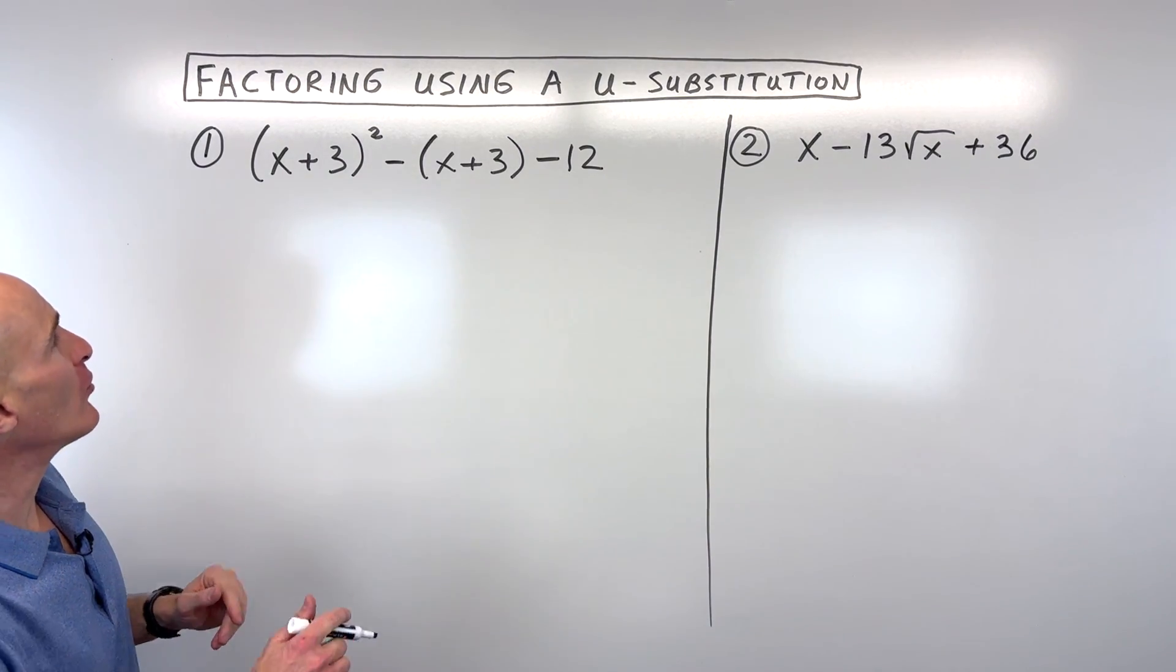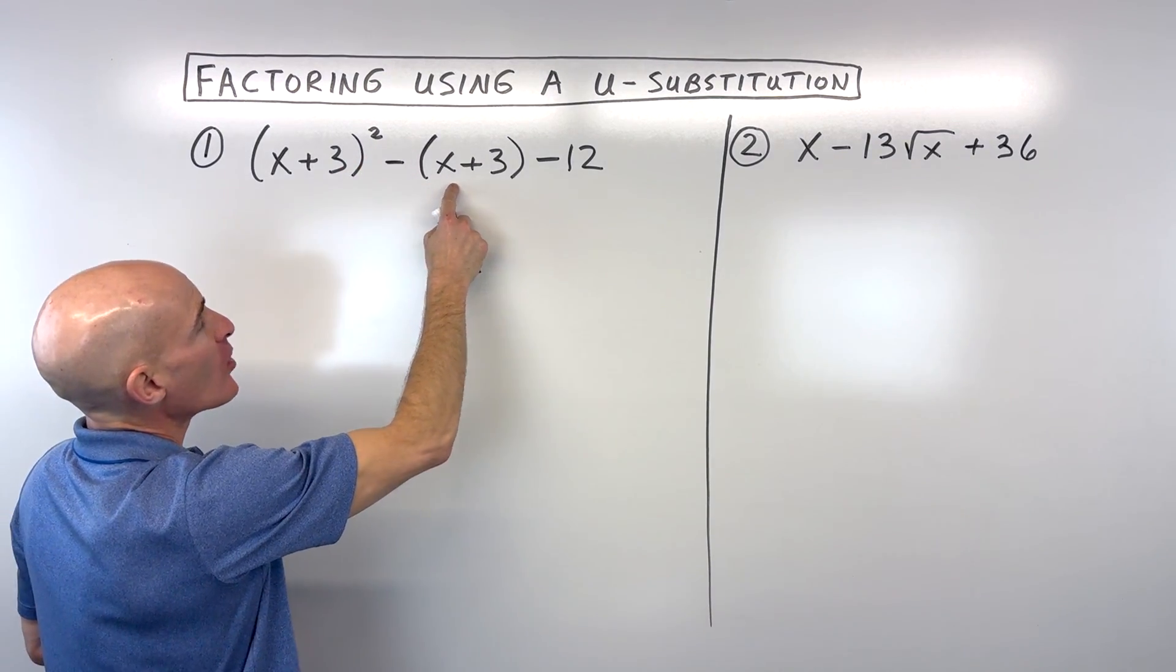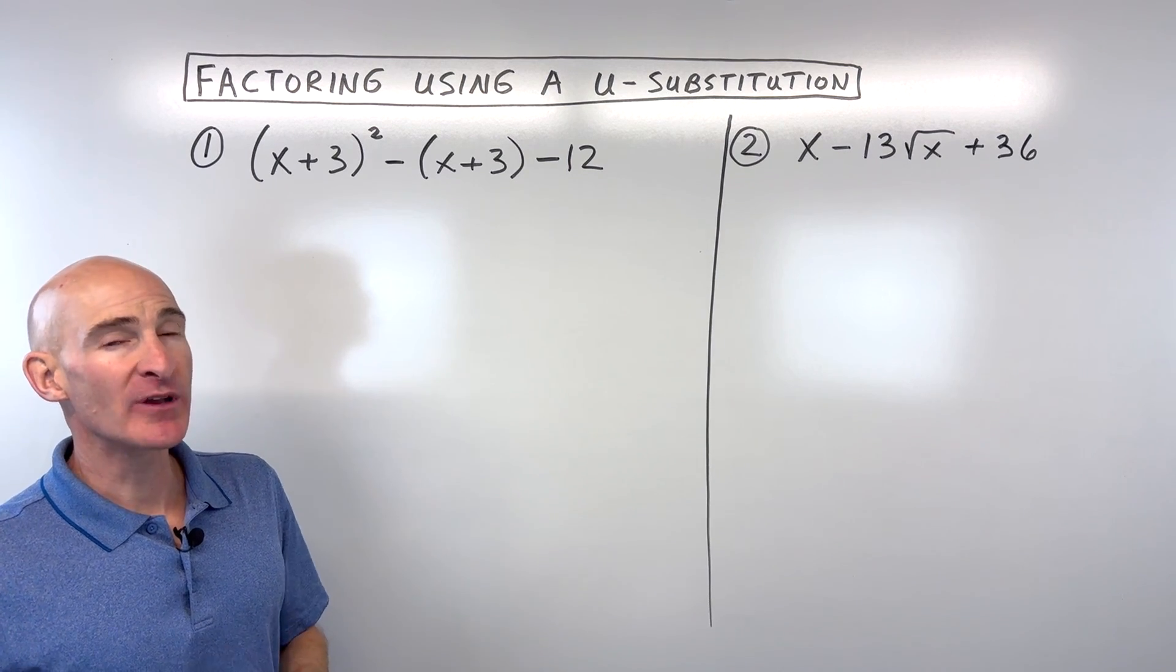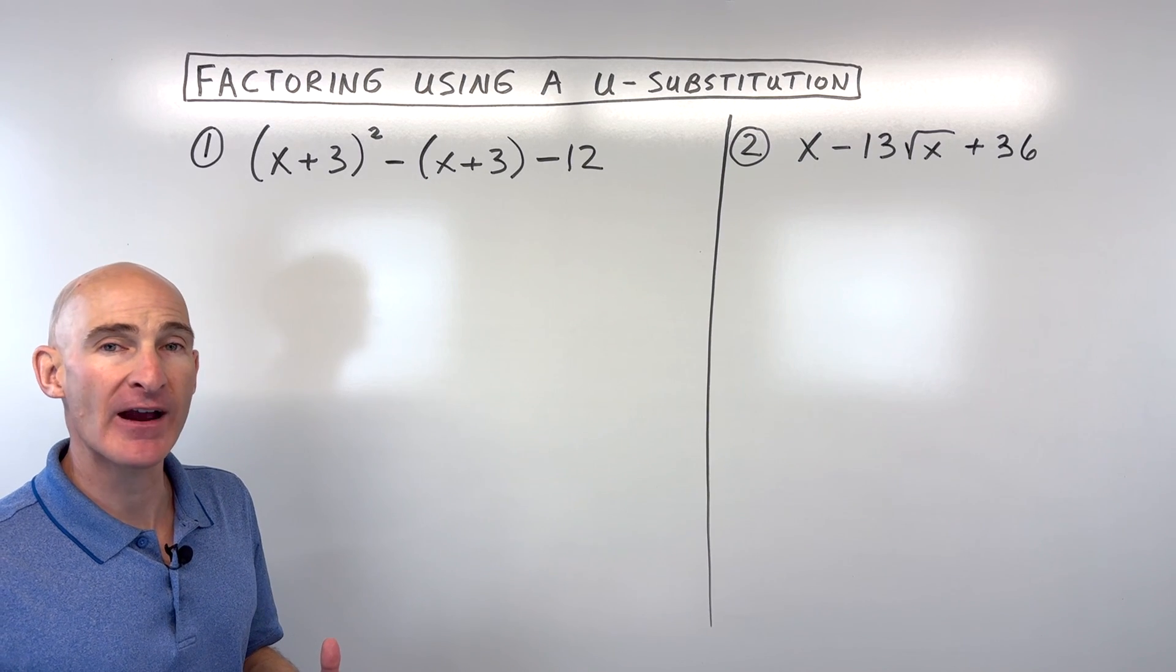Let's take a look at the first example. We've got this quantity here, x plus 3 squared, minus this quantity, x plus 3, minus 12. So it's a little bit of a mess, a little bit complicated. But what we can do with a u-substitution is make it a little bit simpler so it's easier to factor.